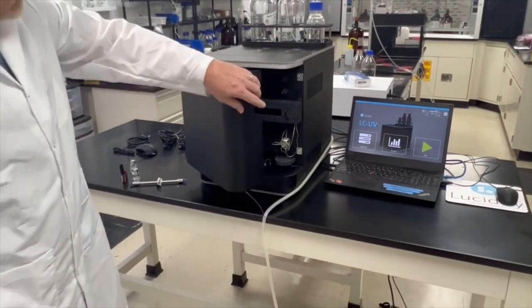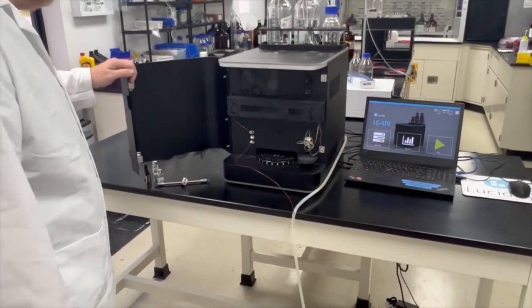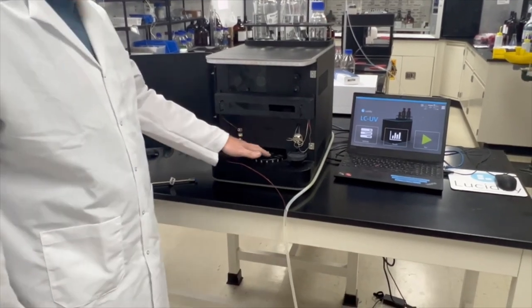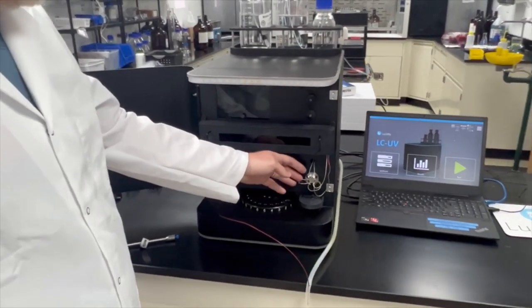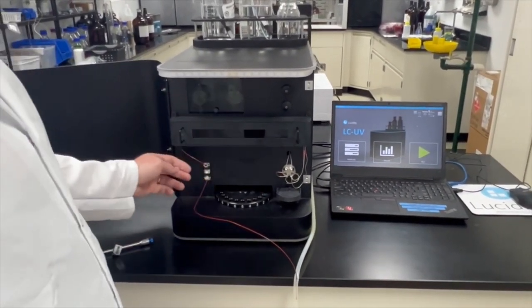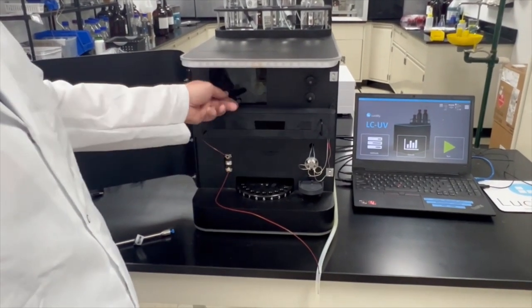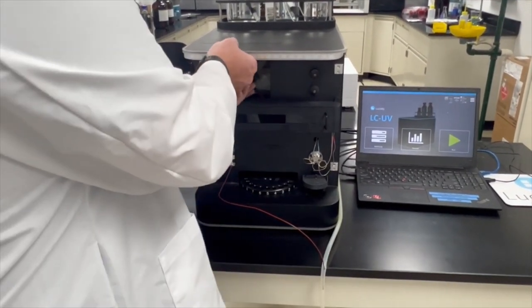We're going to open up the door and see what's inside. Inside you have your turntable, selection valve, flow cell, and a viewer for your pumps.